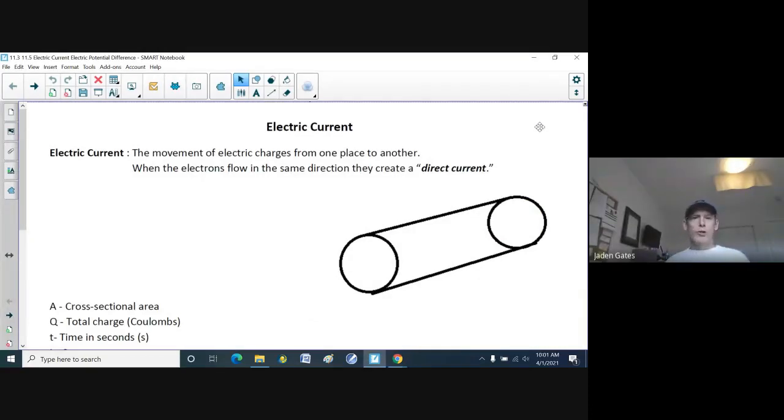Alright, so what we're doing is moving on to our next unit, which is all about electricity. Hopefully earlier this morning you had a look at current and all about electrons and the atom and how it moves. So electrons are the thing that do move. And so what we have is something called electric current, like water, where the movement of electric charges from one place to another.